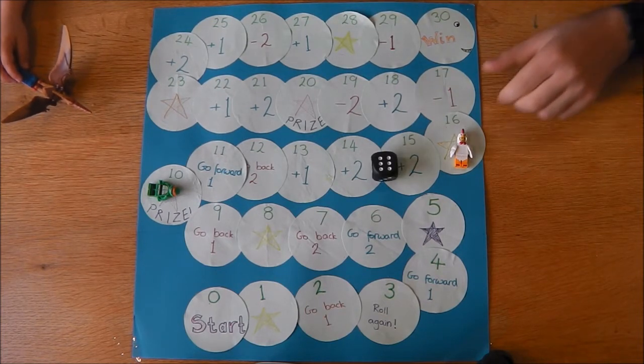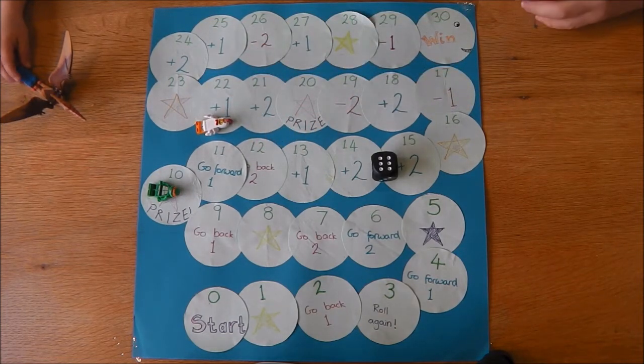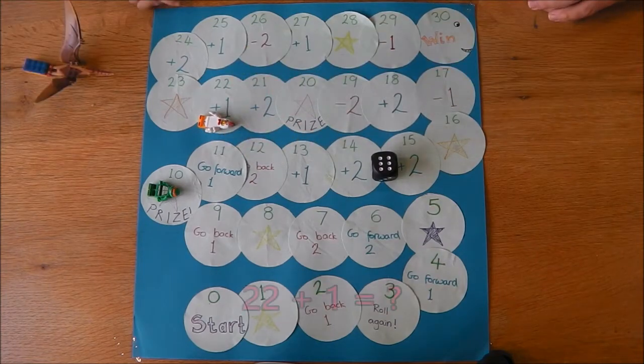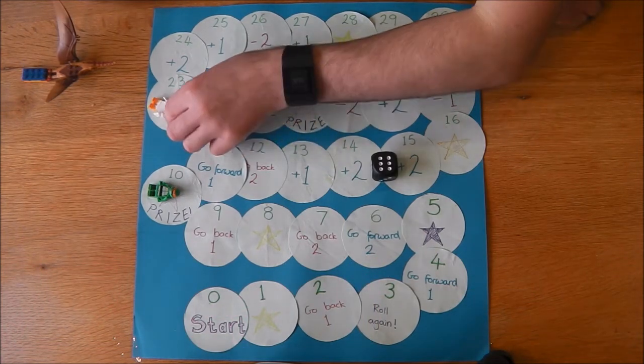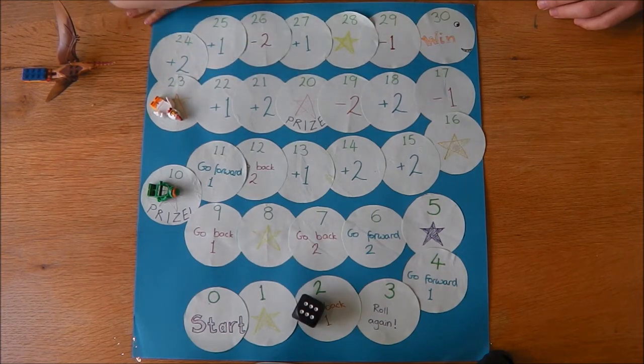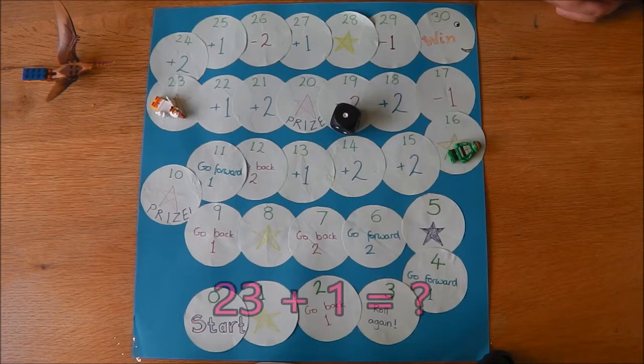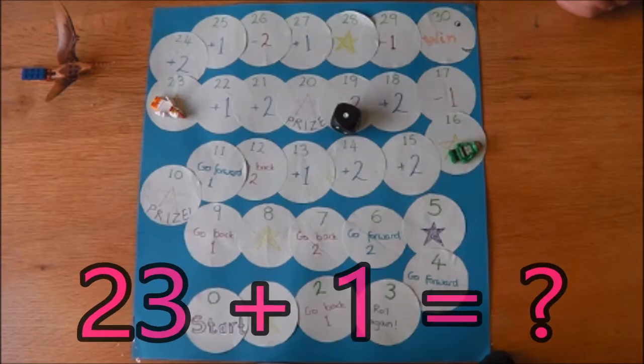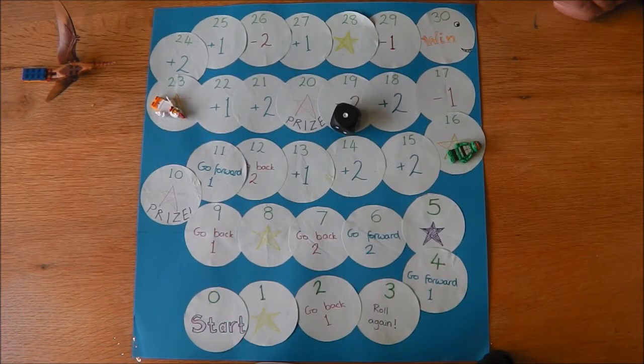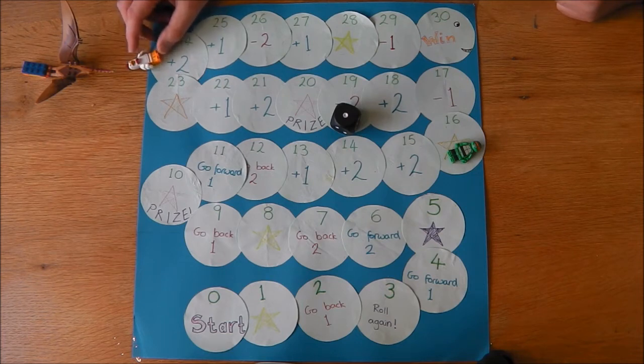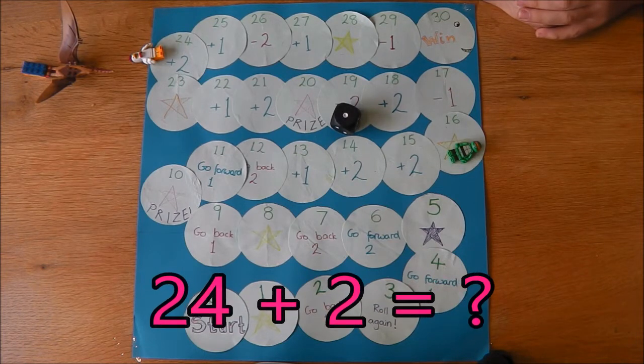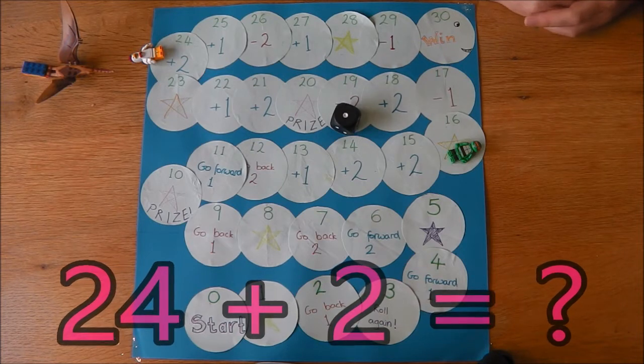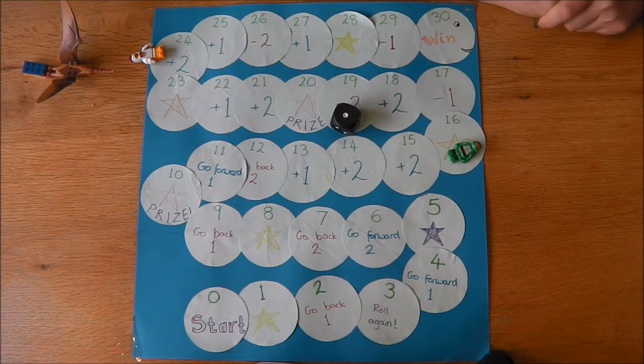Daddy rolled a 6 again. Move forward 6 then, Daddy. What does that say? It says add 1. So what number is Daddy on? Daddy's on number 22. 22 add 1 is 23. What's 23 add 1? 23 add 1 is 24. What does that say that Daddy has to do? It says add 2. So if Daddy's on 24 and he adds 2, what number will he be on? He would be on 26.